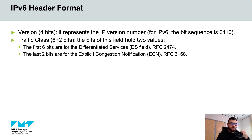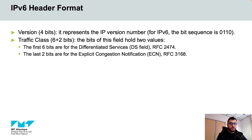The next field is the traffic class, which consists of 8 bits. The bits of this field represent 2 values. The 6 most significant bits hold the differentiated services, or DiffServ field, which is used by the network for traffic management, classification, and for providing quality of service.